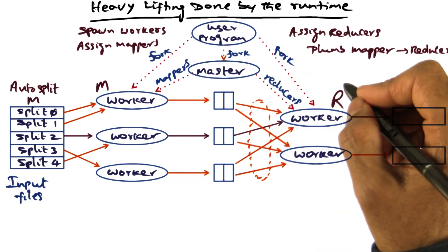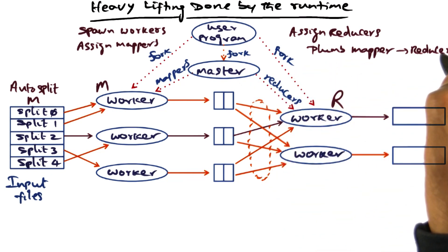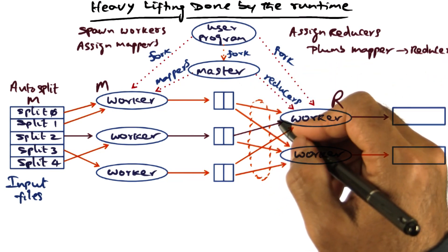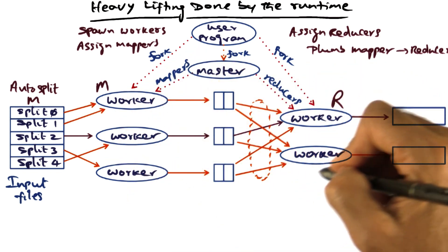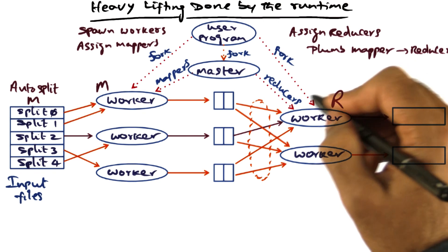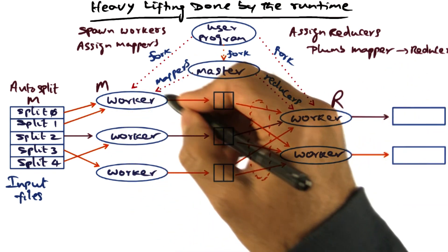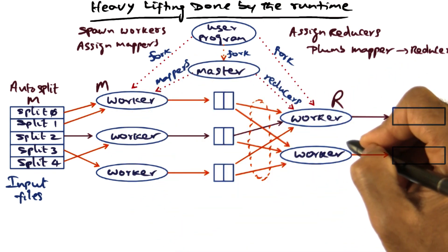The next thing that the master does is to plumb the mapper to the reducers. Because now, when the mappers produce their output, their output has to be sent over to the consumers of the intermediate results of the mapper, namely the reducers.